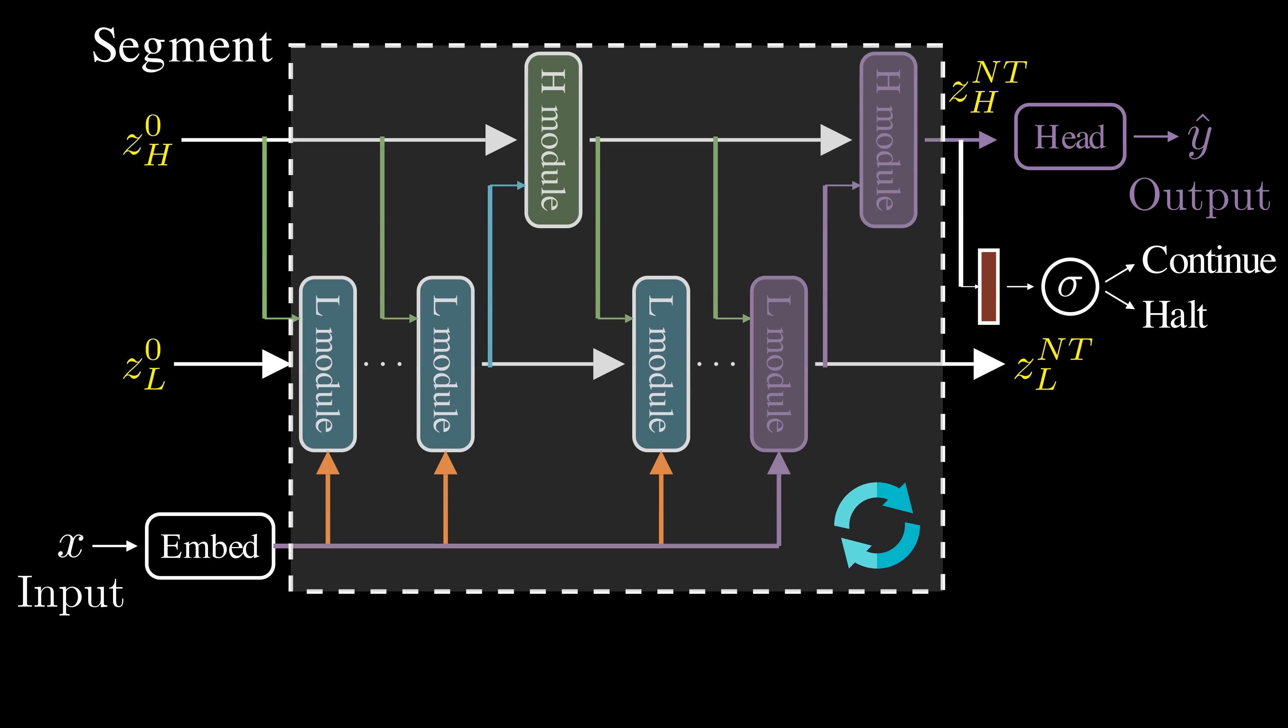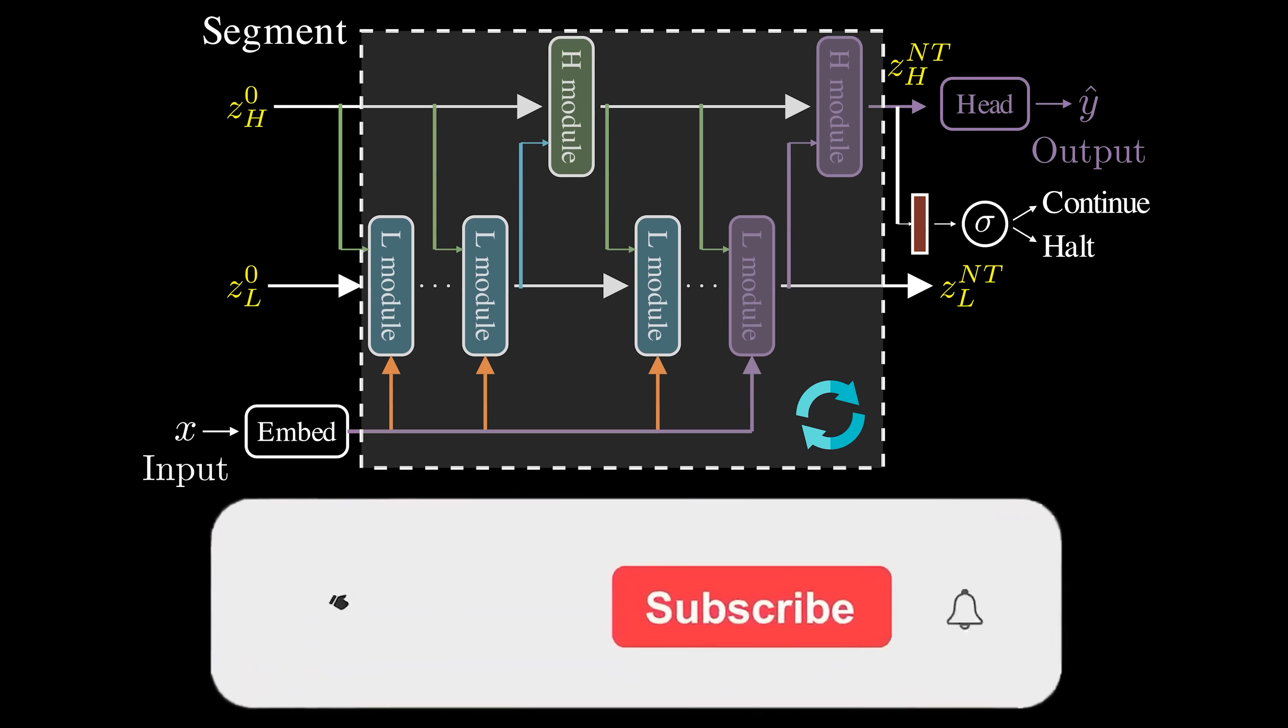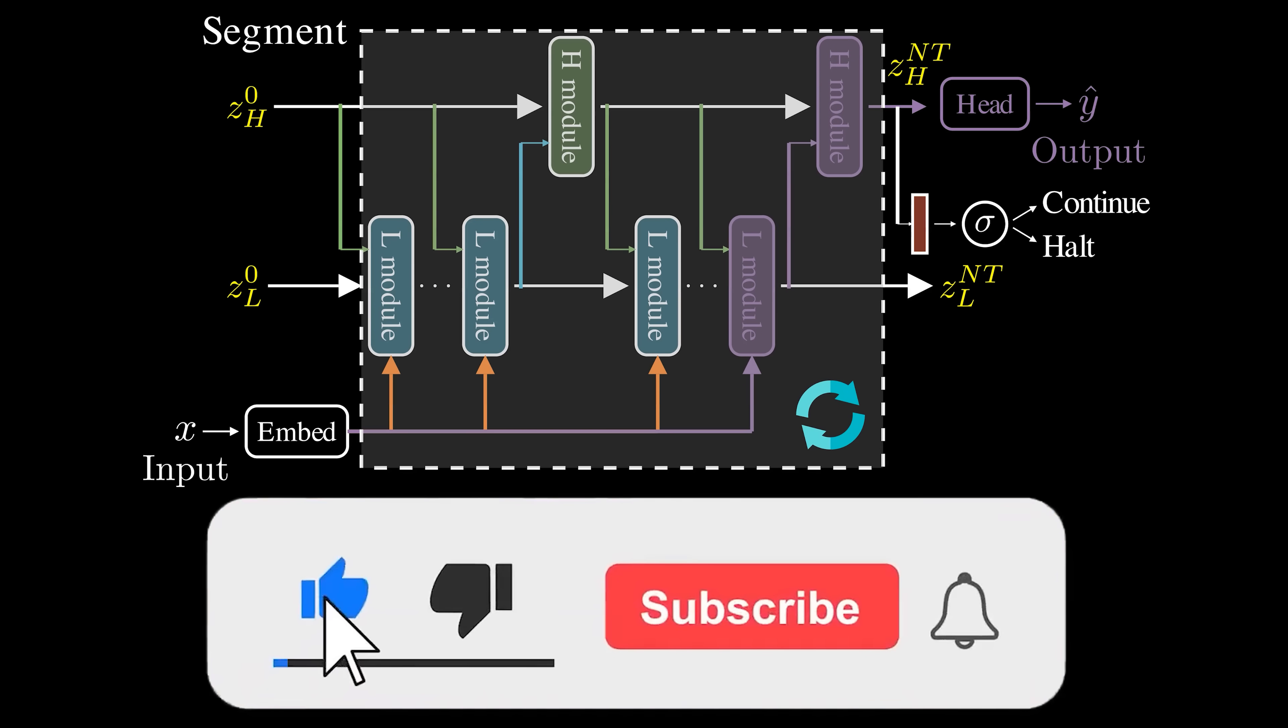It's important to note that, unlike general-purpose large language models, HRM is trained for a specific reasoning task. Even so, it's remarkable that a compact model can tackle these difficult reasoning problems with just 1,000 training examples. I hope you enjoyed this overview, thanks for watching, and I'll see you next time.